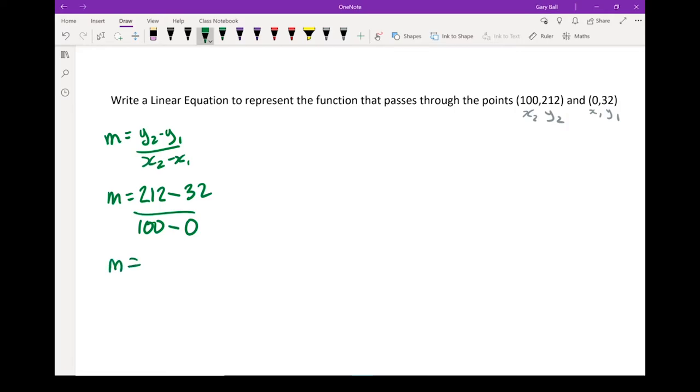All right. So 212 minus 32 should give me 180. 100 minus 0 gives me 100. Let's simplify that. Divide both by 10. m equals 18 over 10. I can go further. Let's divide those by 2. m equals 9 over 5. I can't go any further than that. There's my slope.